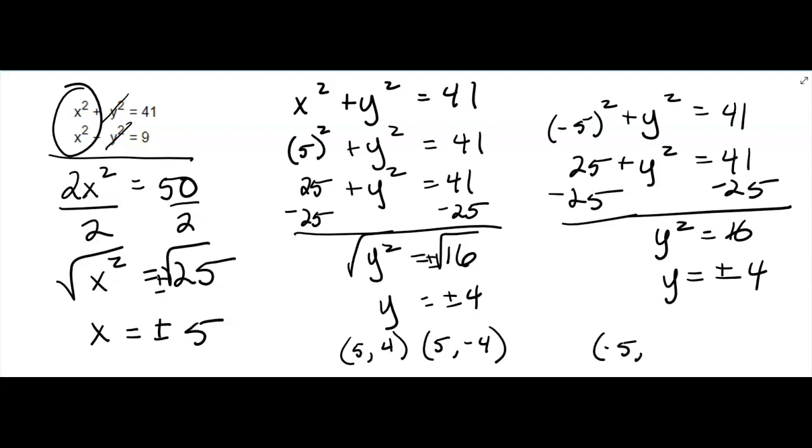So now that means you have two more solutions: negative 5 and 4, and negative 5 and negative 4. So you have four solutions.